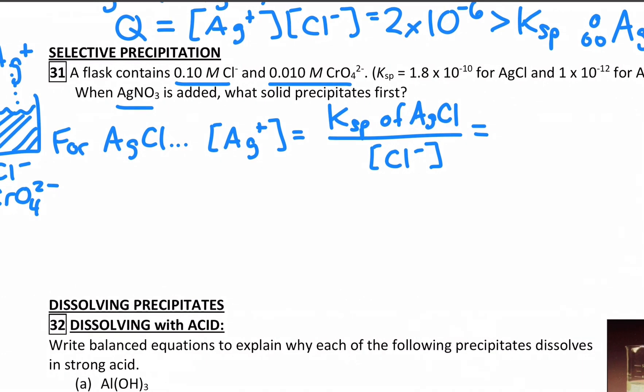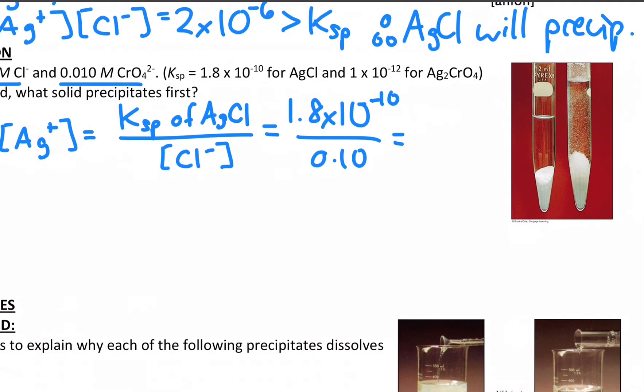So for AgCl, when I do that, I get 1.8 times 10 to the minus 10, just using the Ksp up above, divided by 0.10, and that's 1.8 to 10 minus 9 molar.